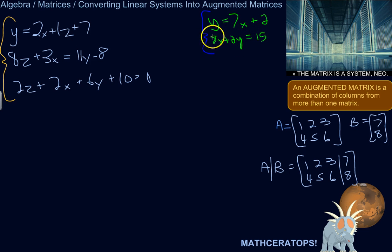We'll have the constants over on the right side. This equation is fine: 8x plus 2y equals 15. If we can rewrite this one so it's something x plus something y equals some constant, then we'll be good.